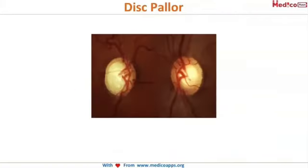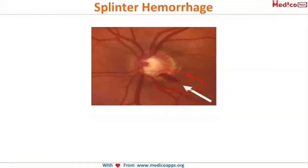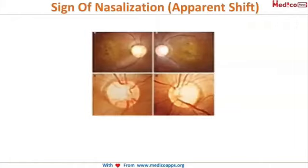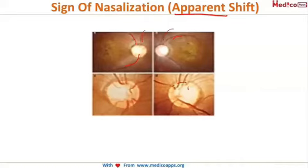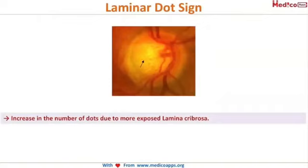The healthy pink color of the NRR is lost — here you can see the disc is clearly very pale. This characteristic splinter hemorrhage is very much diagnostic of glaucoma. Regarding nasal shifting of vessels, this is an apparent sign: because of the thinning of the neuro-retinal rim, the vessels appear as if they have shifted to the nasal side.